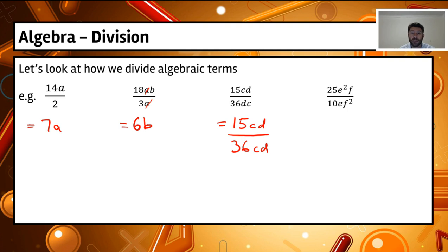Well, the highest common factor is 3, the highest number that divides into both those. So 3 goes into 15 five times, and 3 goes into 36 twelve times.